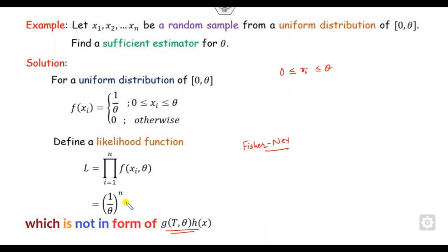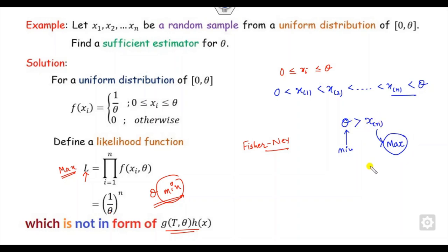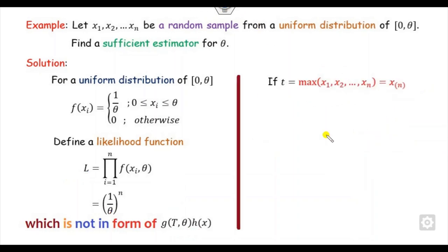Applying the Fisher-Newman criteria: since the likelihood L must be maximized, and L = 1/theta^n, L is maximum when theta is minimum. Using order statistics, we define x_(n) as the maximum of x_1, x_2, ..., x_n. Since the domain requires x_i ≤ theta, the likelihood is maximized when theta is as small as possible, which means theta ≥ x_(n). So our statistic T = x_(n), the maximum order statistic.